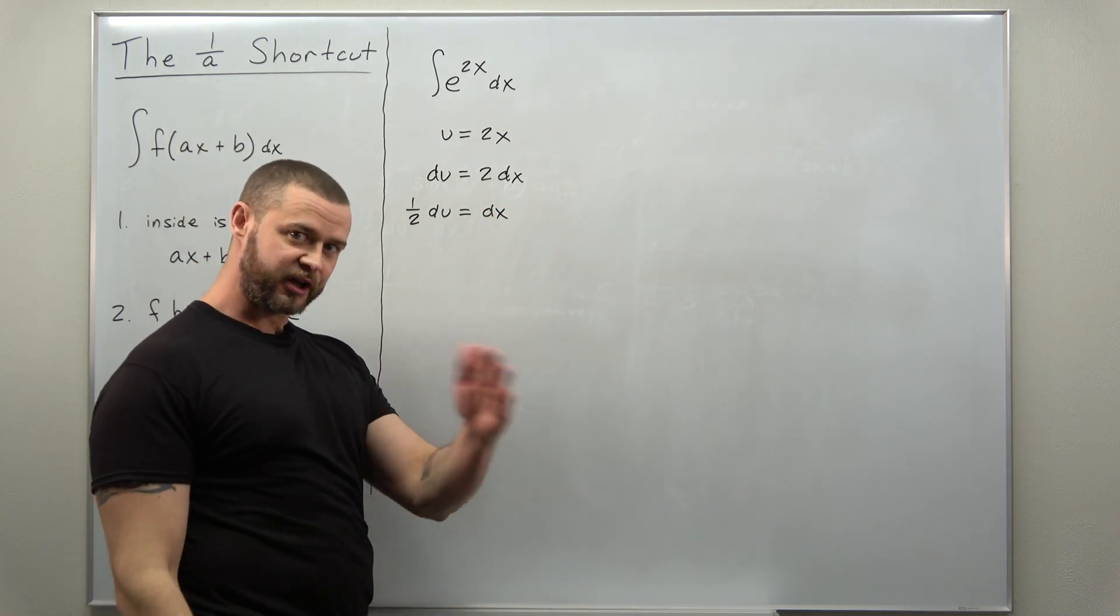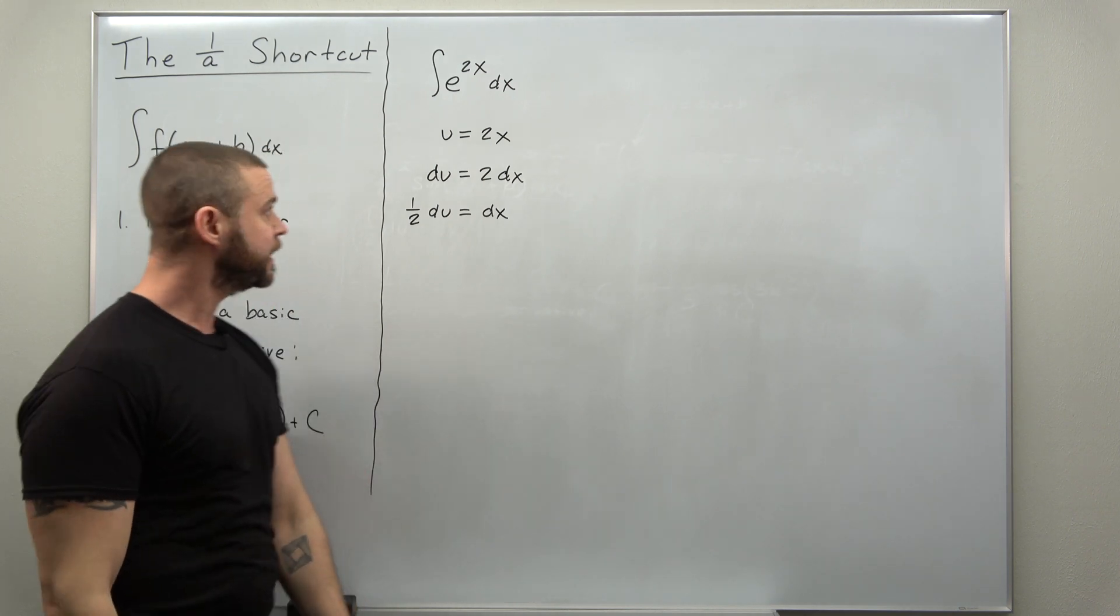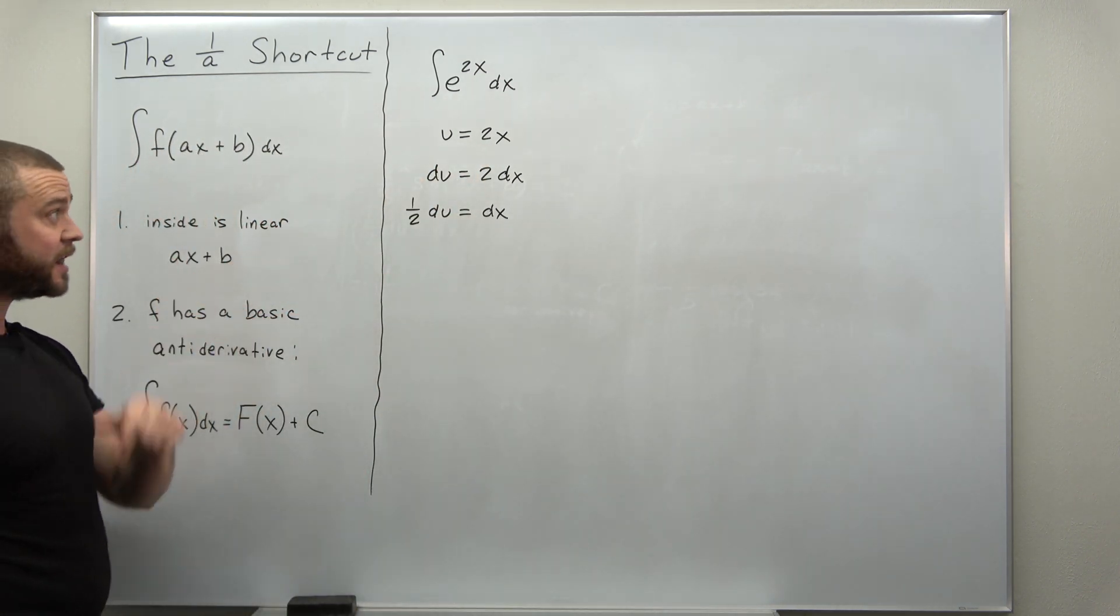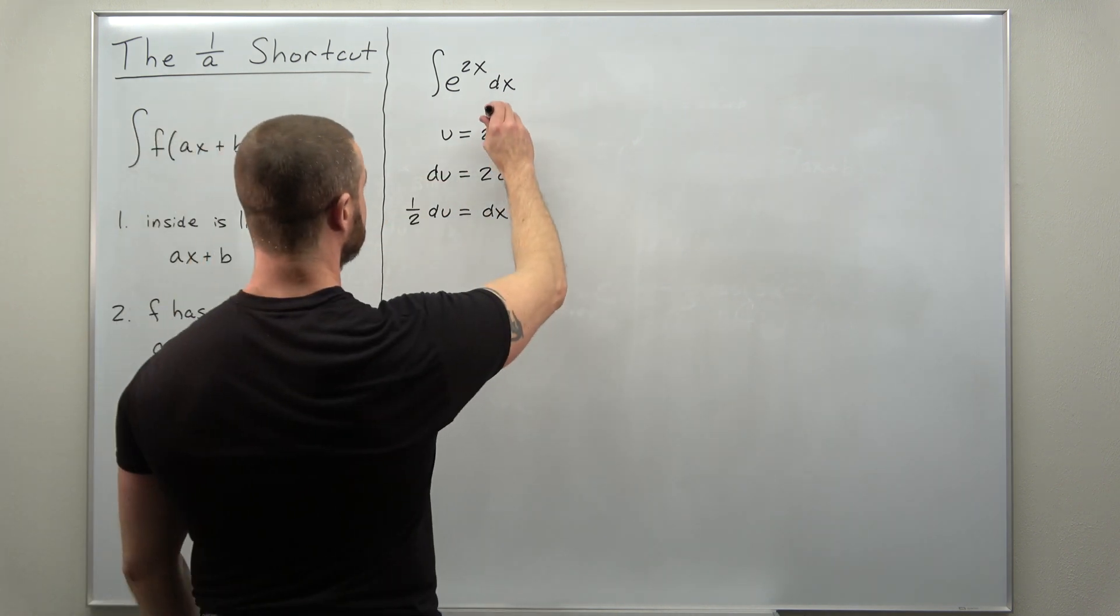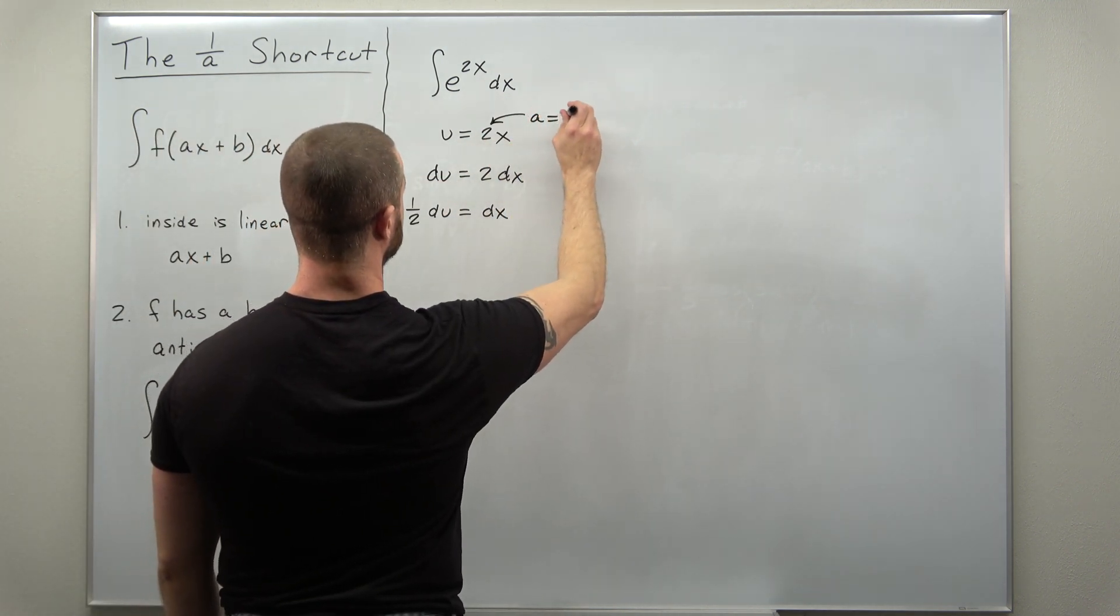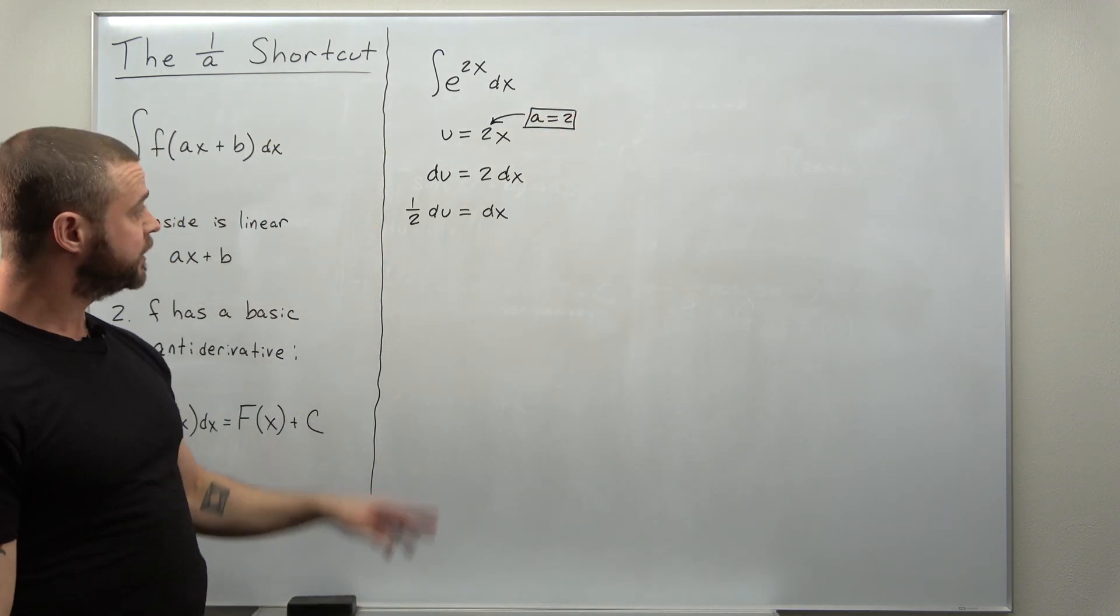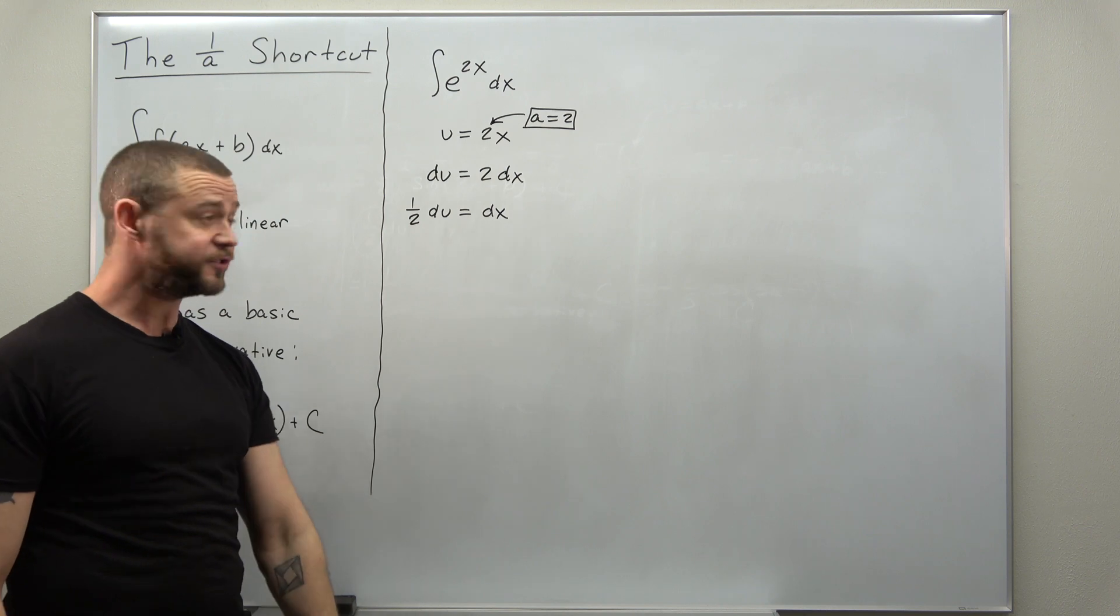Now just to bridge where we're going and where we are, notice this expression is linear and the value of a is 2 so keep that in mind. Let's proceed with the usual substitution.